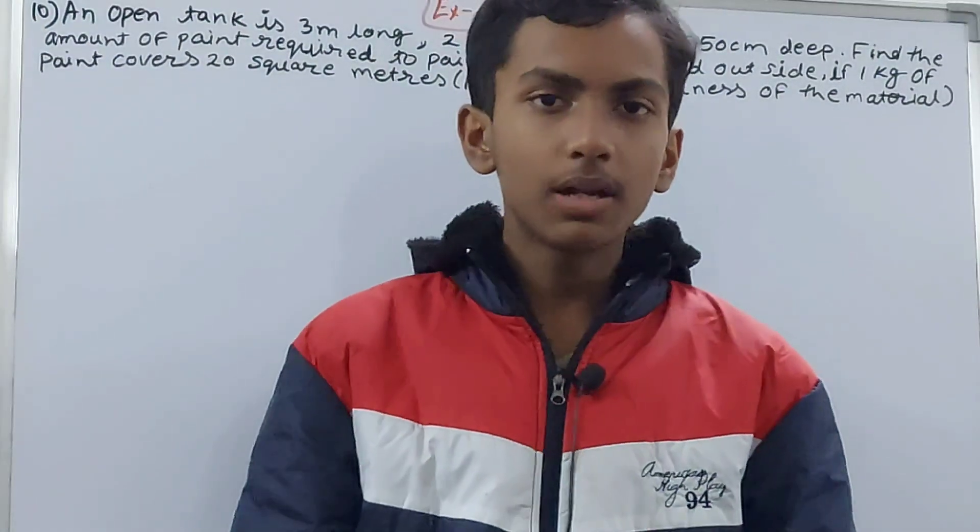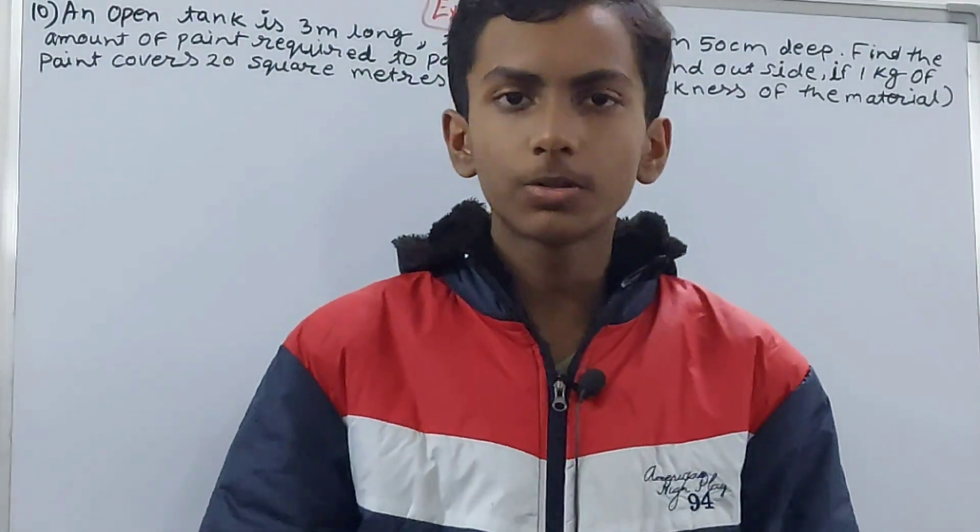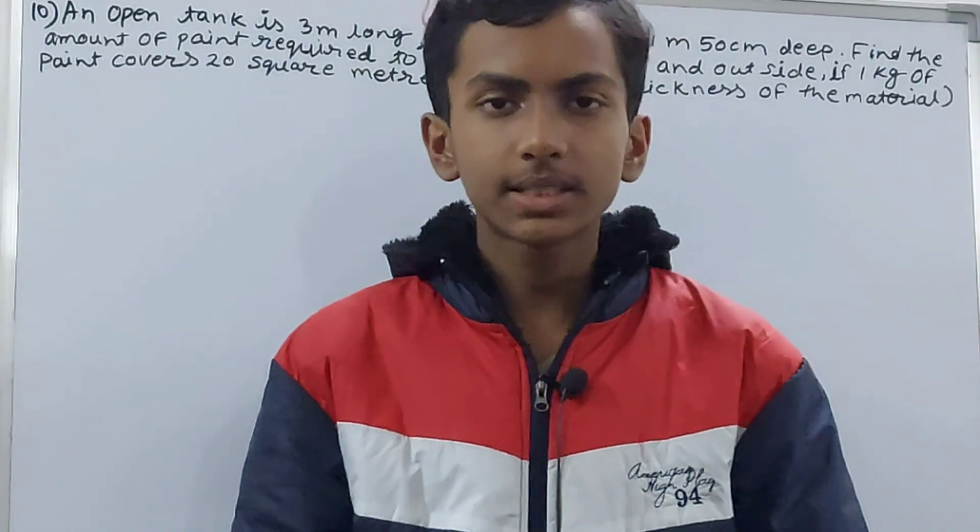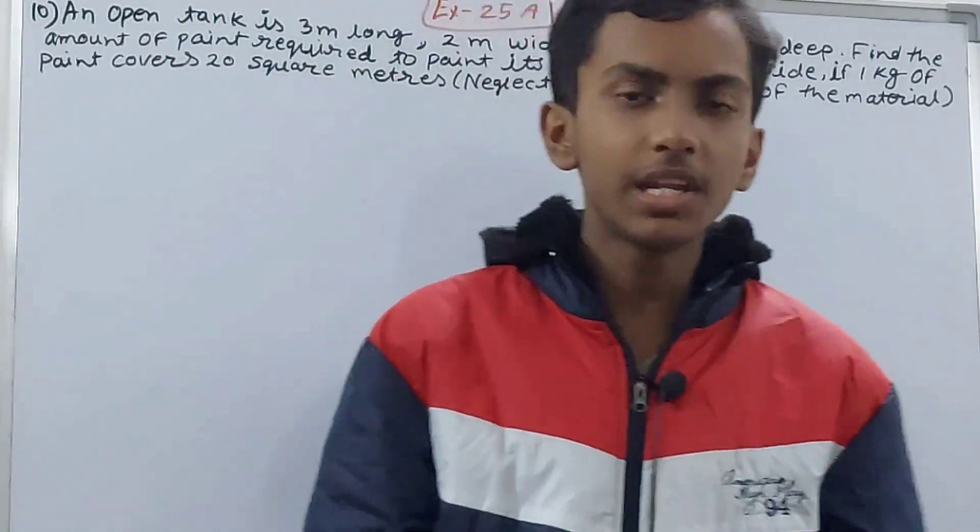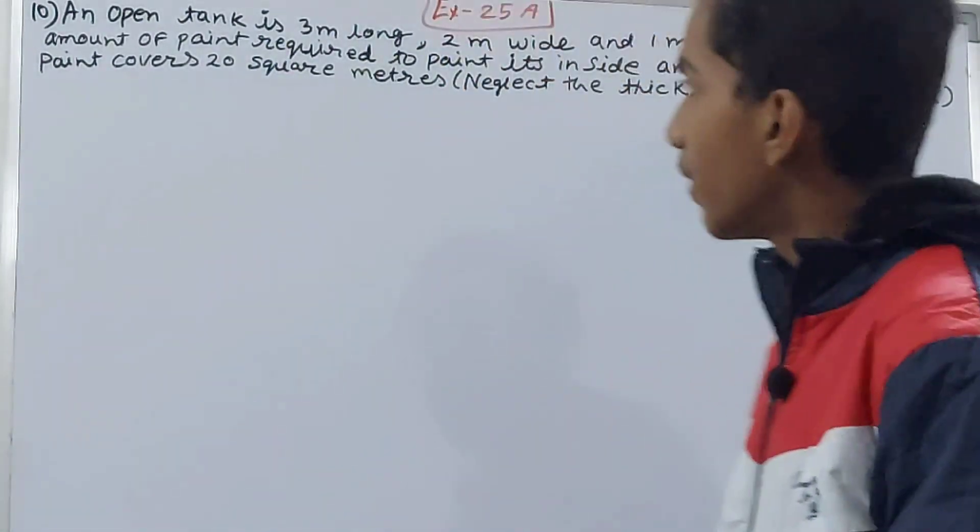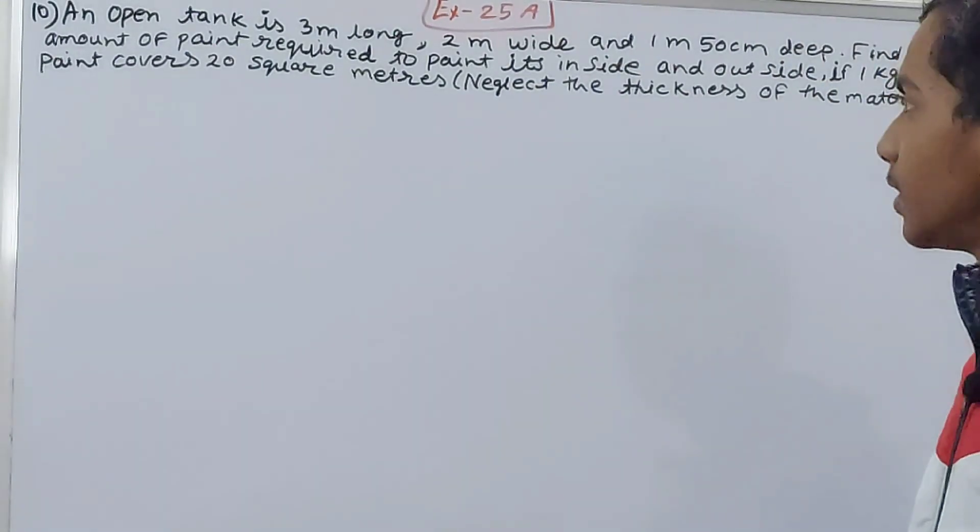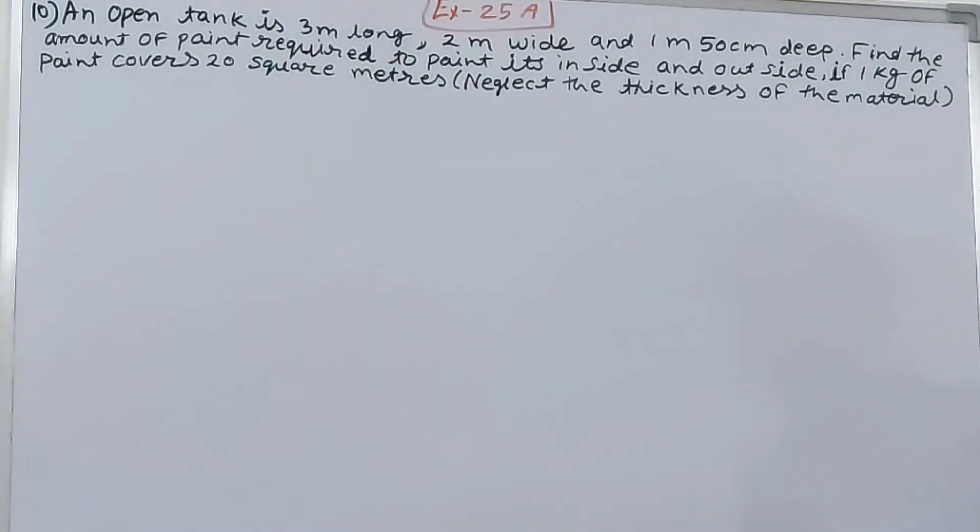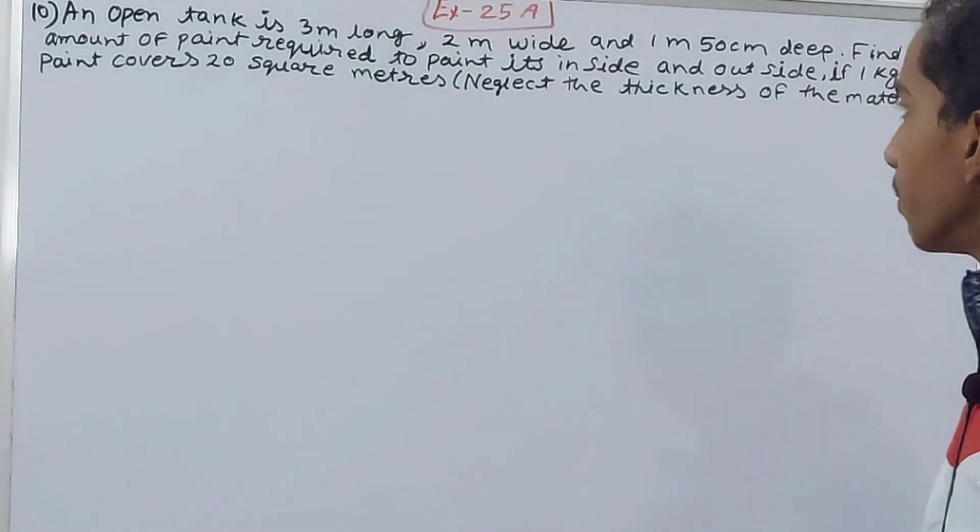Hello friends, welcome back to my YouTube channel Unlock Your Learning. In this video we are going to solve ICC Mathematics Class 8, Chapter 25, Area of Rectilinear Figures, Exercise 25, Question 10. This is an open tank, 3 meters long, 2 meters wide, and 1 meter 50 centimeters deep. Find the amount of paint required to paint inside and outside.